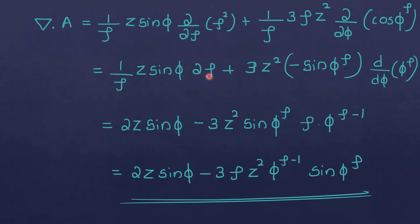Differentiating ρ squared gives 2ρ, so the first term becomes 1 by ρ times 2ρ z sinφ, which simplifies to 2z sinφ. For the φ term: dou by dou φ of cosφ to-the-power-ρ. The derivative of cosφ to-the-power-ρ with respect to φ gives minus sinφ to-the-power-ρ.